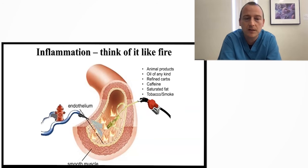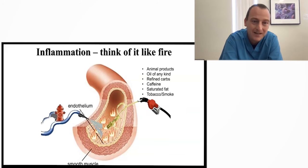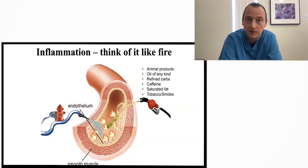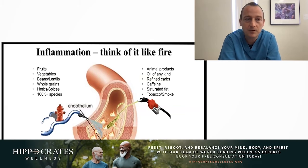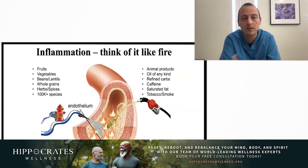What you want to do is pour water on it. You want to do the things that help endothelial function. The proper foods that really help promote good health and are anti-inflammatory, help the natural nitric oxide release to keep the arteries healthy – fruits, vegetables, beans, lentils, whole grains, herbs, and spices.